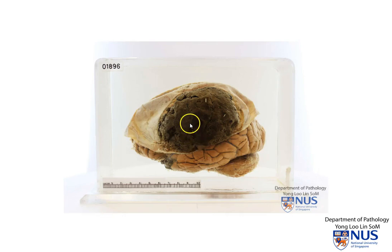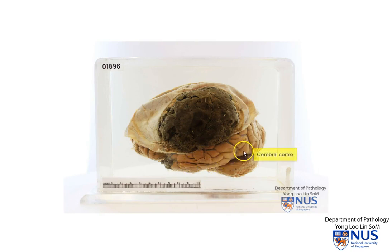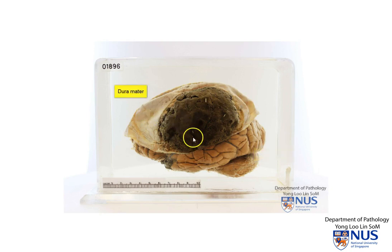Hello. We're looking at the specimen of a brain, and this is the outer surface. You can see that this is the cortex of the brain. This thick structure here is the dura, which is part of the meninges of the brain.